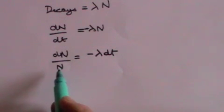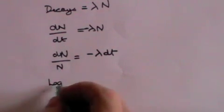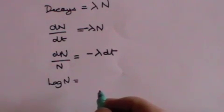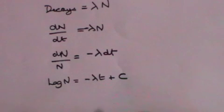the integral of 1 over N is the log of N. And the integral of lambda dt is minus lambda t plus a constant.